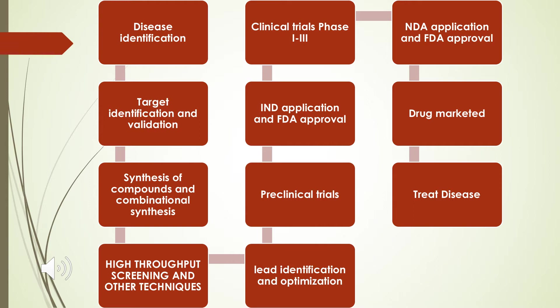Lead identification and optimization follows. Once the lead is identified, we conduct pre-clinical trials on that lead molecule. Once pre-clinical trials are done, we go for the IND application and FDA approval. If we get FDA approval, we go for clinical trials from phase 1 to phase 3. If phase 1 to phase 3 reports are very good, we go for the new drug approval (NDA) and FDA approval. If we get approval, the drug is released into the market, where it is available for treating the identified disease.